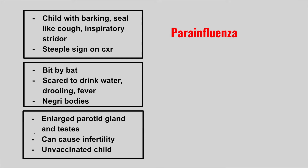The next patient is going to be bitten by a bat, scared to drink water, drooling, fever, and we see Negri bodies. This is rabies. The Negri bodies are pink inclusions that we see on histology.